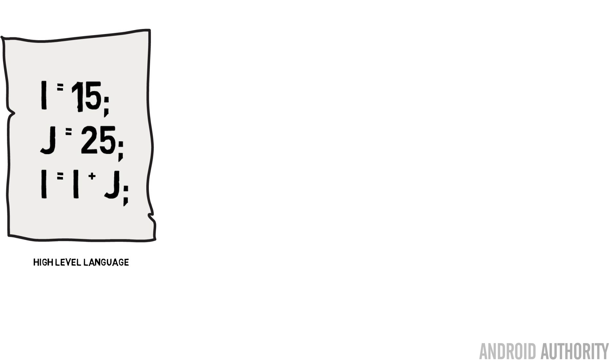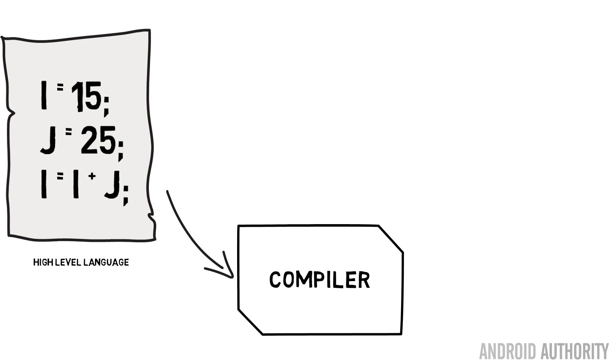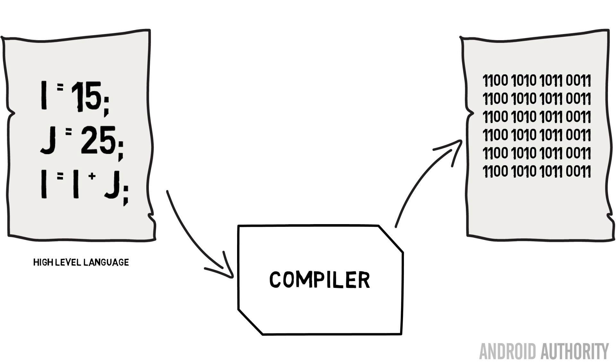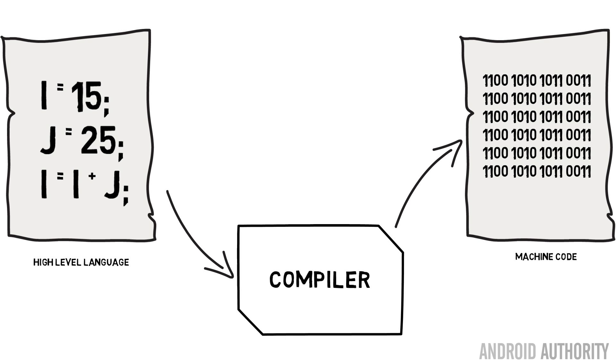C is quite different. C compiles directly down to machine code — if running on a desktop PC with an Intel chip, it compiles to Intel machine code; if running on an ARM chip on a smartphone, it compiles directly to ARM machine code. C doesn't have automated memory management — it's up to the programmer to free memory at the time they feel is best. So generally, Java is considered slightly slower than C when the two are run side by side.